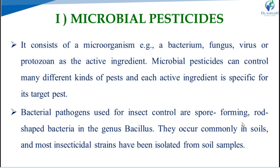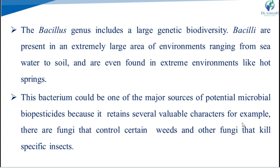First, microbial pesticides. It consists of microorganisms i.e. bacterium, fungus, virus or protozoans as the active ingredient. Microbial pesticides can control many different kinds of pests and each active ingredient is specific for its target pest. Bacterial pathogens used for insect control are spore-forming rod-shaped bacteria in the genus Bacillus. They occur commonly in soils and most insecticidal strains have been isolated from soil samples. The Bacillus genus includes a large genetic biodiversity and is present in extremely large range of environments ranging from sea water to soil and even in extreme environments like hot springs.